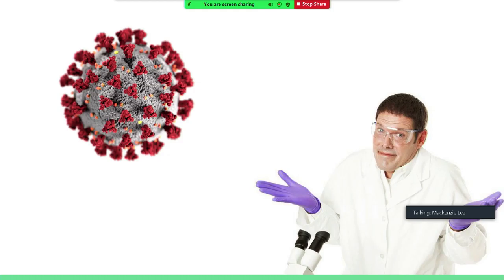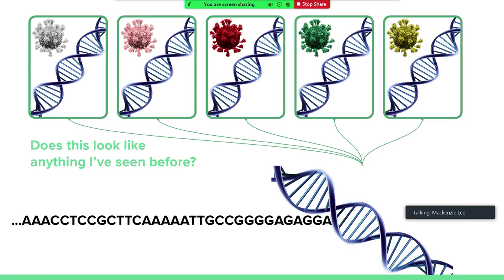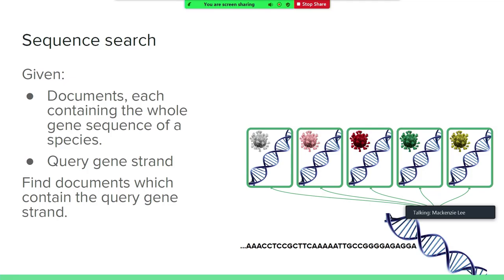Let's say we have some mysterious infectious disease, and the first thing we want to know is probably whether or not we've actually seen this before or whether it's something completely new. So what do you do? You grab this virus, you extract its genes, and you feed it through a machine called a sequencer, which basically spits out the A's, C's, T's, and G's that make up its genome. After that, you would look through your repository of all the viruses that you've sequenced before to ask: have I seen this before? Does this look like anything I've seen before? This is what you call sequence search.